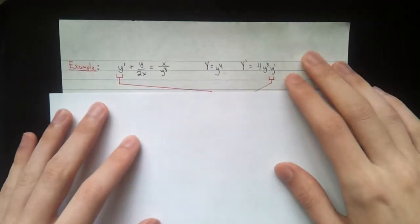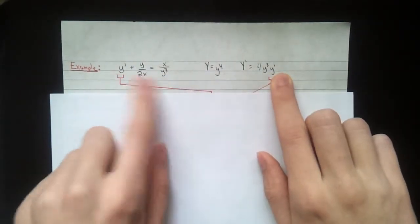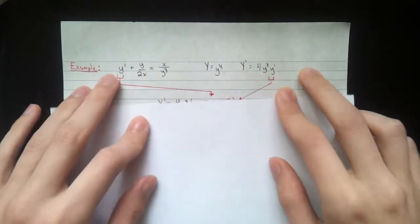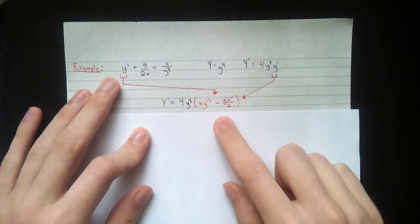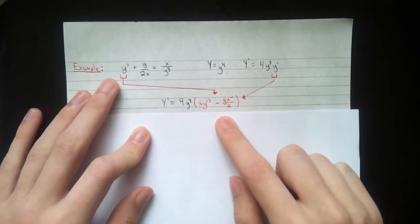So now we take this y, rearrange this, and substitute it in. So we get 4y cubed times xy to the negative 3, minus yx to the negative 1 over 2.